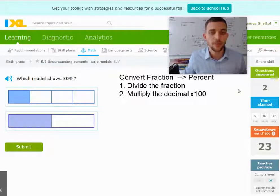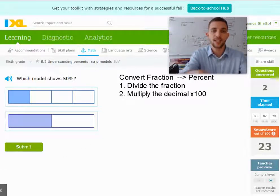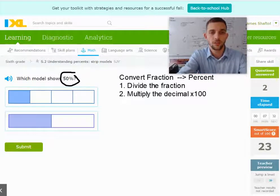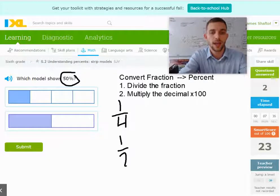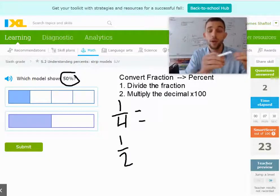In the next one, we're going to do the same thing. We take the fraction, and we're looking for 50 percent. So here I can take 1 fourth, and I have 1 half.